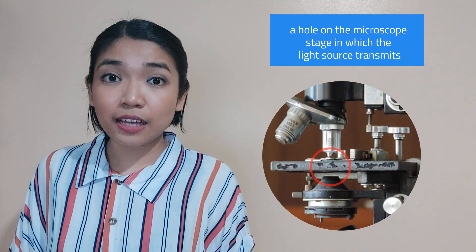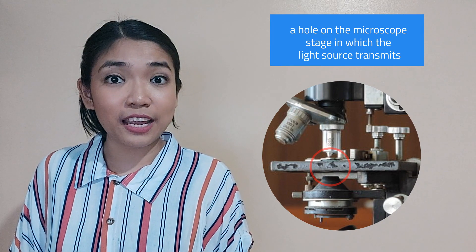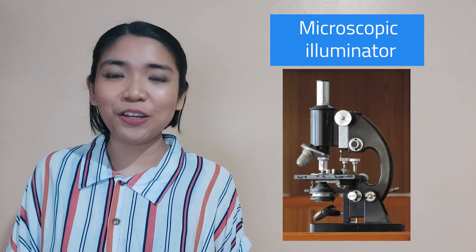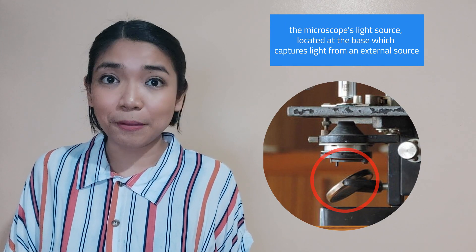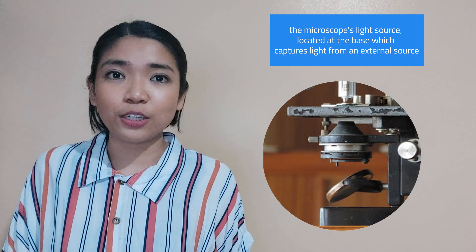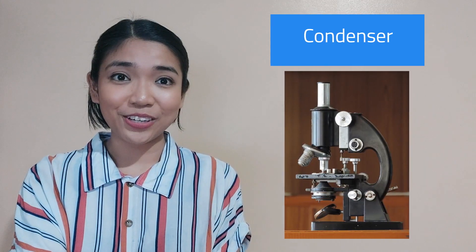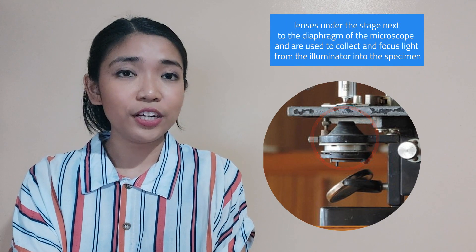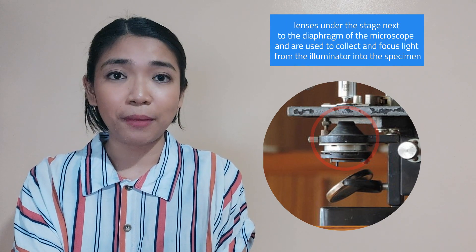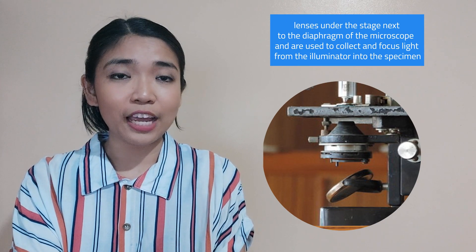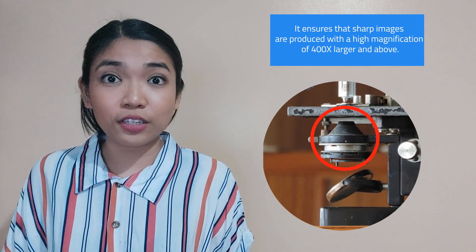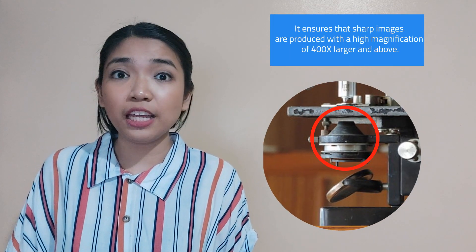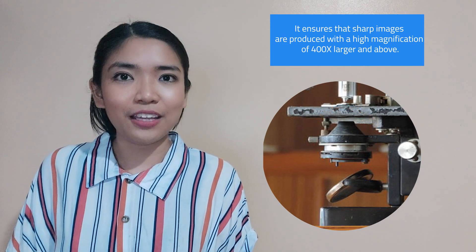Aperture: this is a hole on the microscope stage through which the light source transmits. Microscopic illuminator: this is the microscope's light source located at the base which captures light from the external source. Condenser: these are lenses under the stage next to the diaphragm of the microscope, used to collect and focus light from the illuminator into the specimen. It ensures that sharp images are produced with a magnification of 400 times larger and above.